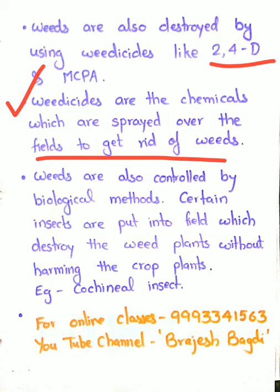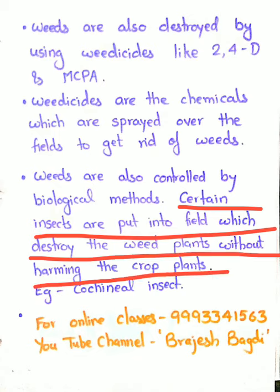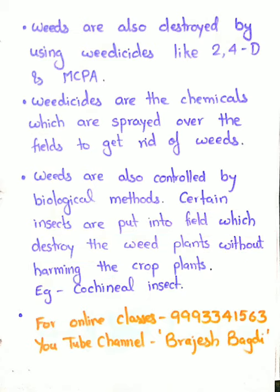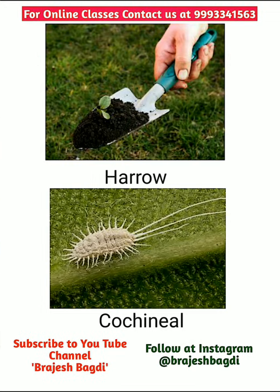Weeds are also controlled by biological methods. In biological methods, certain insects are put into the field which destroy the weed plants without harming the crop plants. You can see a figure of the cochineal insect here — it is an insect that is placed in fields and helps remove weeds by feeding on them, while leaving the main crop unharmed.